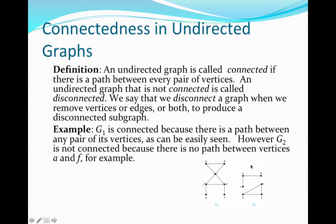Any of the vertices in this upper part here cannot be connected to any of the vertices in the lower part because there is no edge connecting this upper part to this lower part. For example, we cannot find a path connecting vertex A to vertex F. And these different parts of a disconnected graph are actually called connected components.